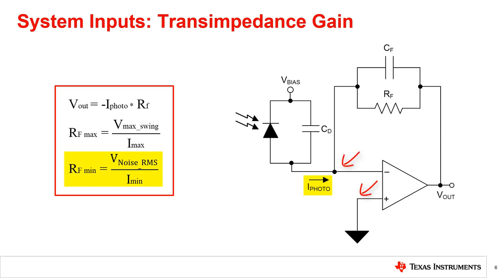The minimum signal that can be detected will depend on how much noise is referred back to the input, so the smaller the noise seen at the input, the smaller the signal you can resolve. Using Ohm's law, divide the total integrated output RMS voltage noise by the minimum current that is seen at the input to obtain RF.